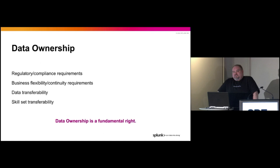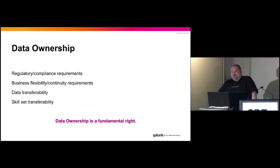There are also business flexibility and continuity requirements. As a business, you probably should not have all your eggs in one basket — you don't have your entire cloud infrastructure in AWS, or if you do, you don't have it all in one availability zone. The ability to move things from one platform to another or send things to multiple platforms at the same time is really important. Data transferability: if you use the right semantic conventions, you can change platforms and change tools whenever you feel like — you're not locked in anywhere.